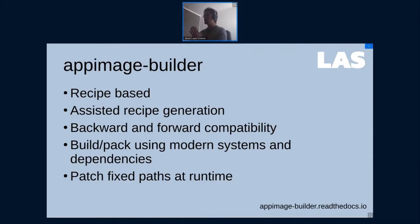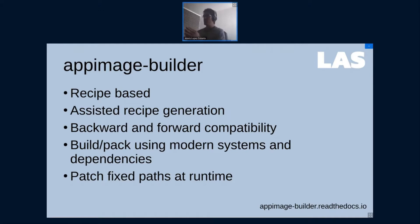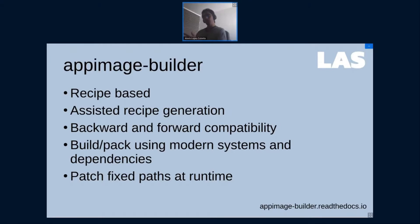AppImageBuilder is a new tool for creating AppImages. It is recipe-based and has assisted recipe generation. The resulting AppImages will be backward and forward compatible and can also be created on modern systems, unlike other existing tools. It also has the ability of patching fixed paths at runtime, which means as a developer you have control over your application. If a dependency has a fixed path that cannot be changed at runtime, you'll have a hard time creating an AppImage of it — but with AppImageBuilder this is solved.